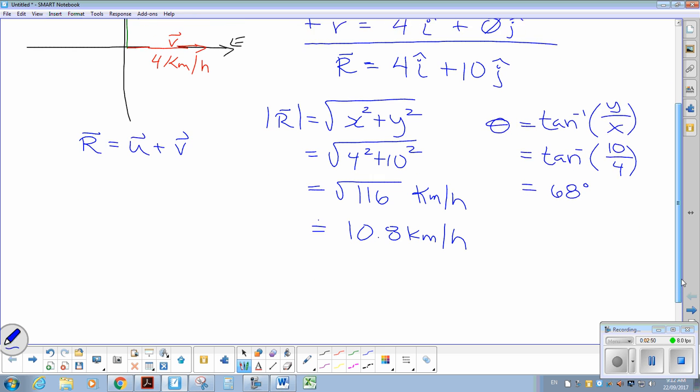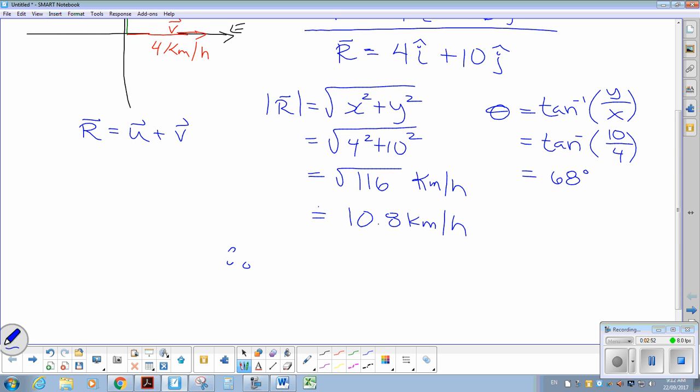So my answer, therefore, the resultant is 10.8 kilometers an hour. My direction, when we use the algebraic method, is always positive X component. So it means it's heading east. Positive Y component, so it's heading north. So the answer would be east, 68 degrees north.